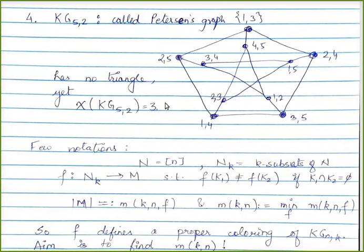The first interesting example is the Petersen graph, KG_{5,2} — two-element subsets of a 5-element set. The vertices are labeled e.g. {3,4}, and the edges connect disjoint 2-subsets of {1,2,3,4,5}. You should check that there is no triangle in this graph; the smallest cycle is a 5-cycle C_5.